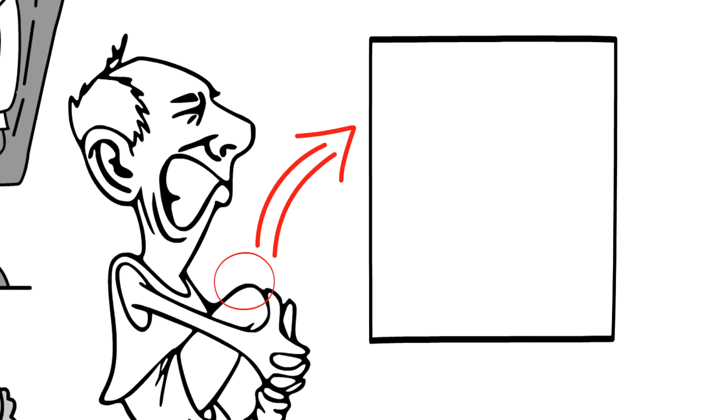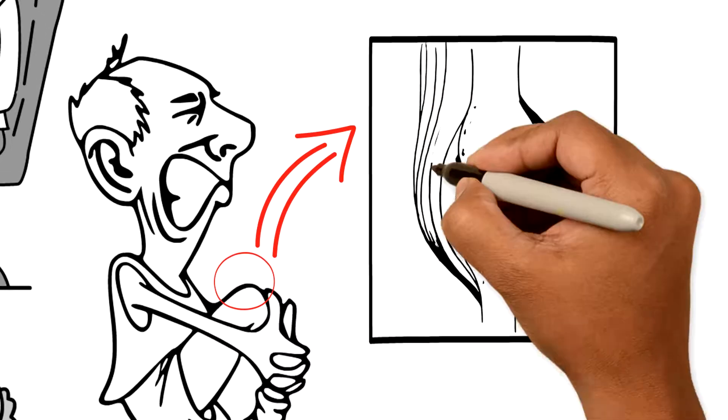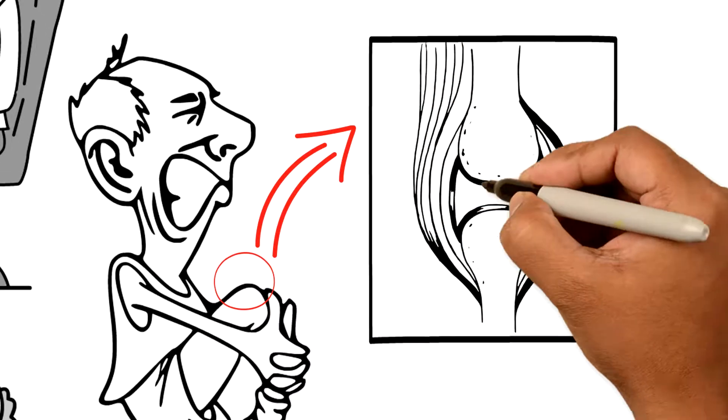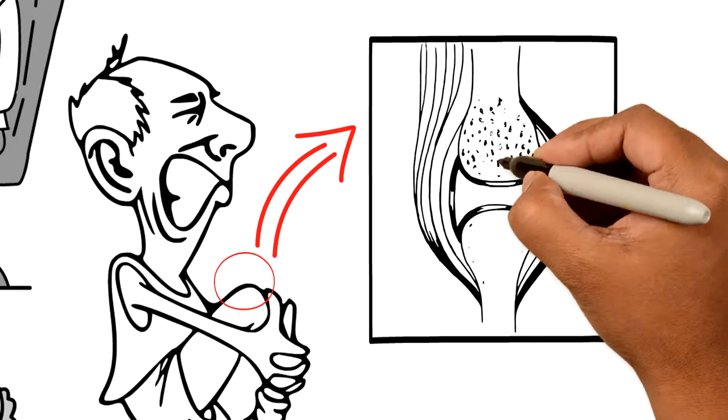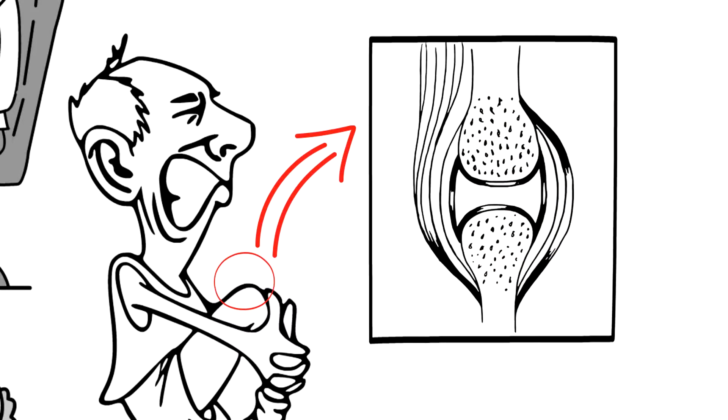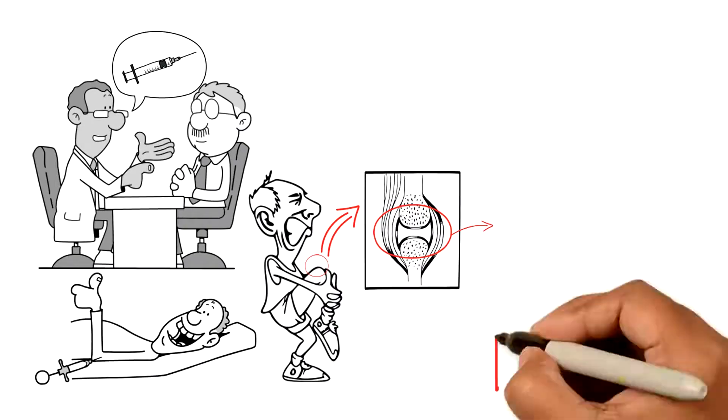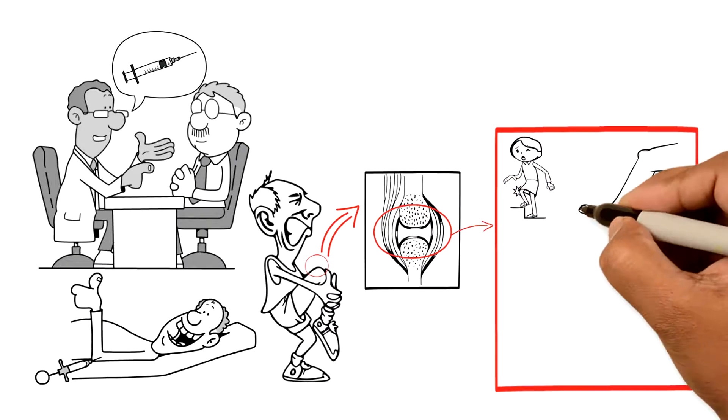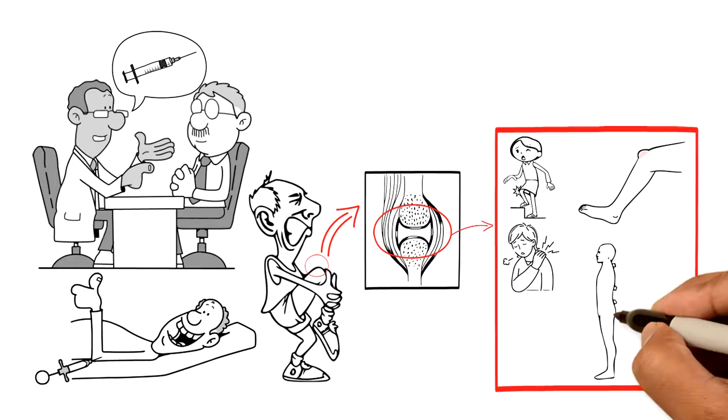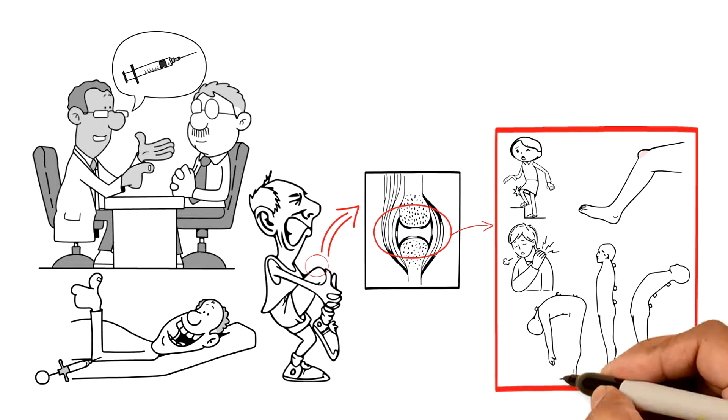Joints may become sore or damaged due to a number of conditions such as inflammation, infection, trauma, wear and tear, or overuse. This damage may cause pain, swelling, stiffness, locking, and decreased range of motion.